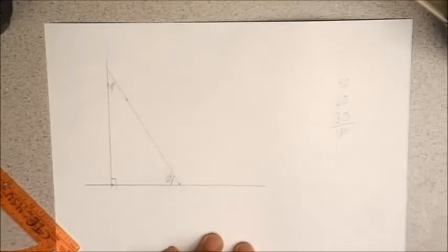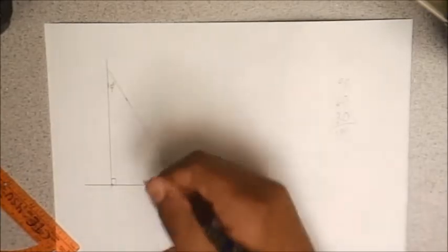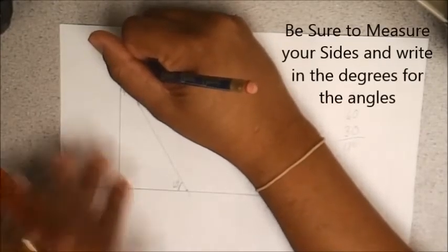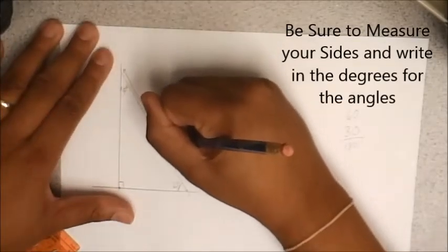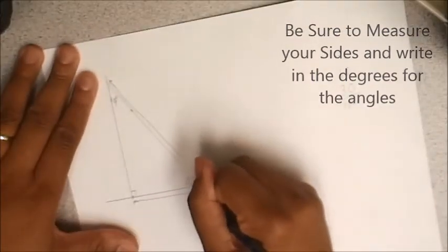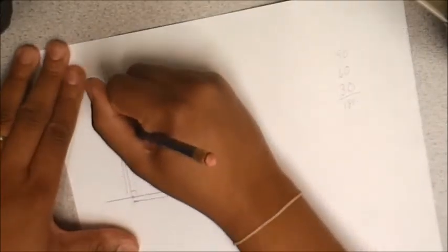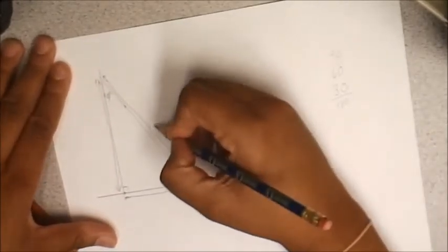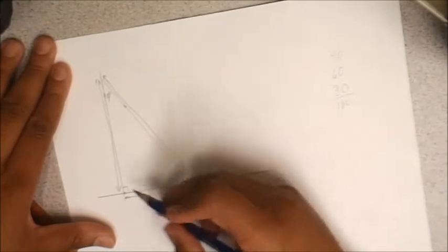Now again remember one of the things that you have to do with triangles or for our project you have to measure your sides. And remember your measurements go on the outside of your triangle. Angles go on the inside. Measurements go on the outside.